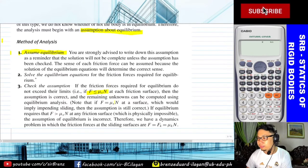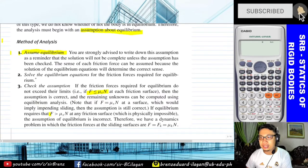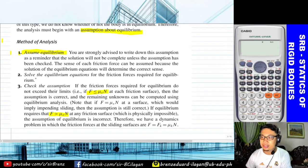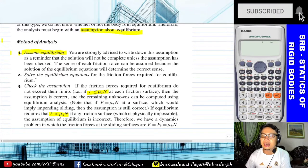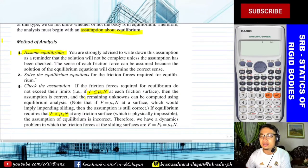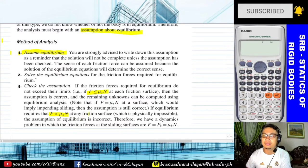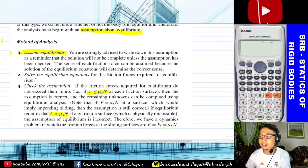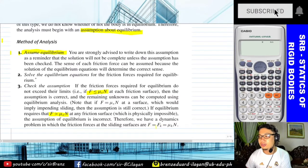But if equilibrium requires that F or the frictional force is greater than mu sub s times N at any friction surface — which is physically impossible — then the assumption of equilibrium is incorrect. So there are two checks: if F is less than or equal to mu sub s times N, the assumption is correct; but if it is greater than mu sub s times N, the assumption is incorrect. Therefore, we have a dynamic problem and we need to use the value of the kinetic coefficient of friction.